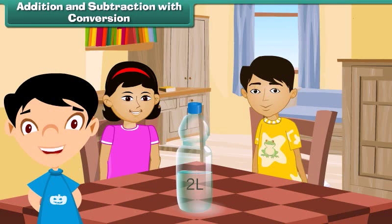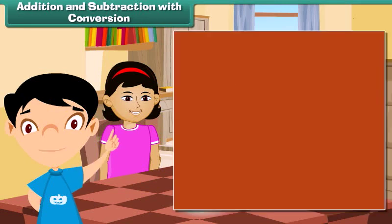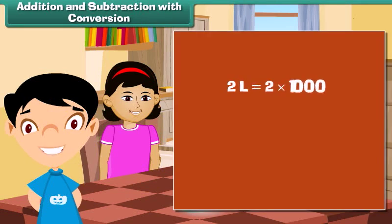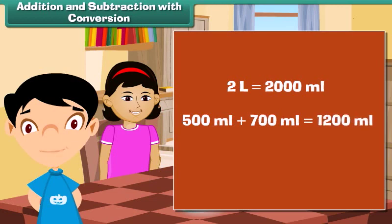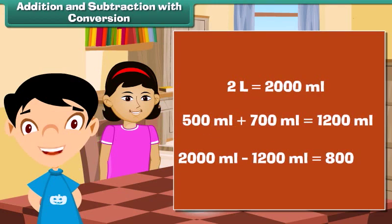Addition and subtraction with conversion: Soha's water bottle holds 2 liters of water. Soha drank 500 milliliters and her friend Govind drank 700 milliliters. Total water in the bottle is 2 liters, which equals 2 into 1000, or 2000 milliliters. Total water consumed is 500 milliliters plus 700 milliliters, which equals 1200 milliliters. Water left in the bottle is 2000 milliliters minus 1200 milliliters, which equals 800 milliliters.